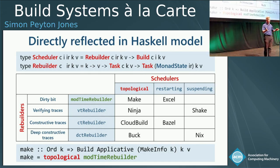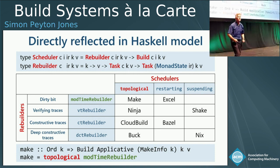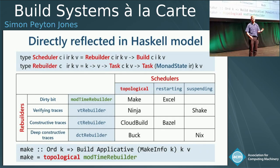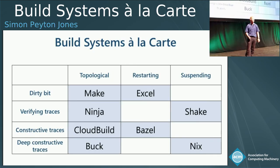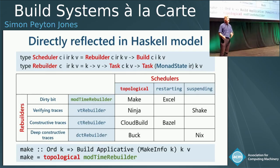Schedulers and rebuilders have first-class types, and then we can compose them. Topological, restarting, and suspending all have type scheduler; the things in the vertical column all have type rebuilder. Now we can build four times three — twelve different build systems — just by applying one to the other. Make is the result of applying the topological scheduler to the mod-time rebuilder, and all combinations make sense.